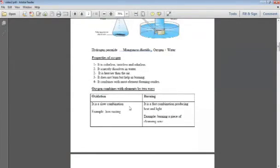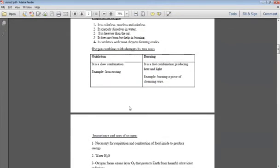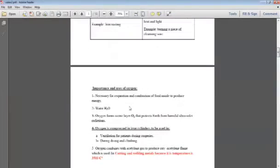The combination of oxygen: oxygen can combine with elements in two ways. Oxidation is either by a slow combination that is called oxidation, example the rusting of iron, or by a fast combination that gives us heat and light, and this is burning. Any burning anything, burning a piece of paper for example. So oxidation and burning, oxidation is a slow combination, while burning is a fast combination.